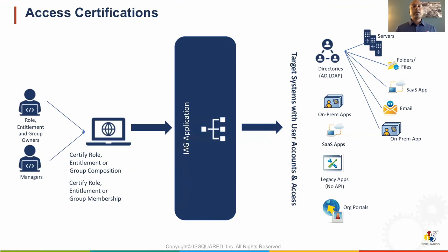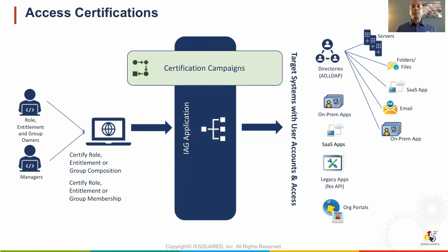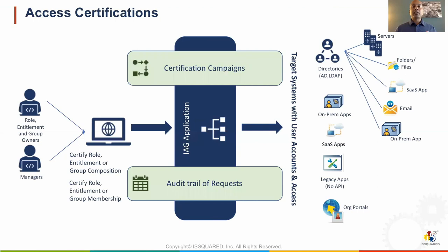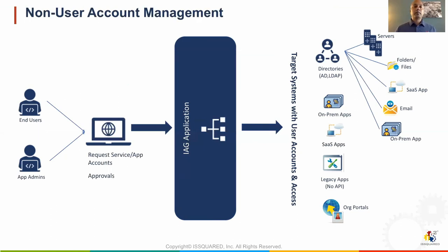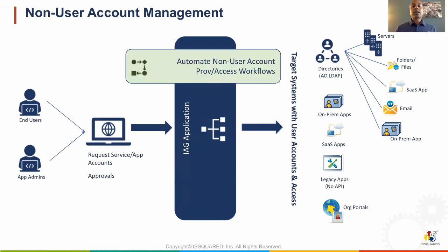Access certification should be a continuous process. Privileged access should be certified more often compared to non-privileged access. The IAG applications come with out-of-the-box templates for different types of certification campaigns. All transactions, including the actions performed by the certifiers — approve, revoke — are saved and can be audited. Non-user account management: access requests and workflows for service or application accounts can be automated. Processes around passwords such as password rotation can be enforced, integration with PIM/PAM solutions can be done, and all transactions performed are saved and can be audited.